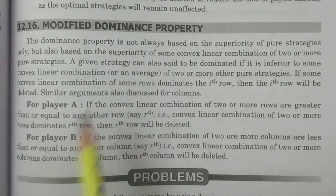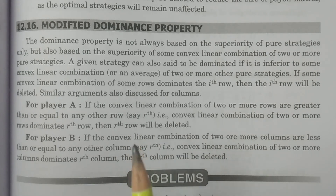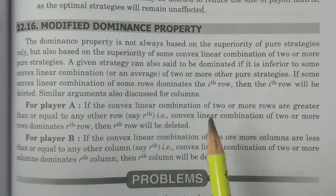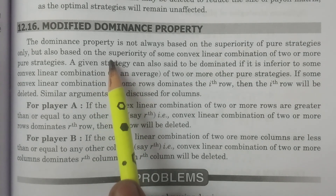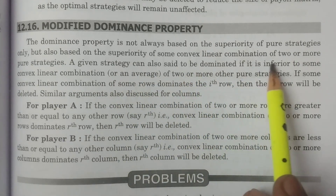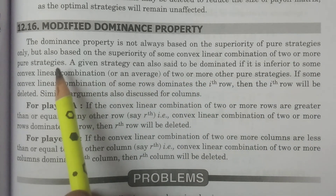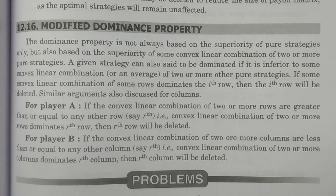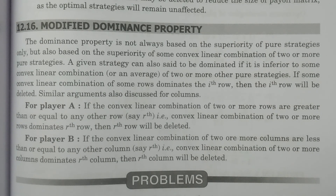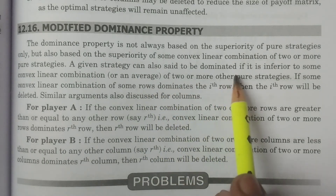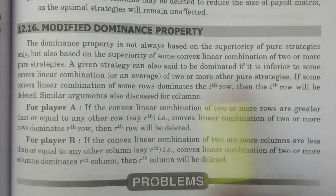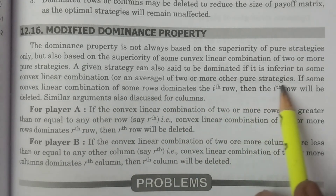Whereas now it is not only about comparing one pure strategy with another pure strategy. We can also consider the superiority based on the convex linear combination of two or more pure strategies. If we consider convex linear combination of two or more pure strategies, we can compare this with another particular strategy. So a given strategy can also be said to be dominated if it is inferior to some convex linear combination of two or more other pure strategies.